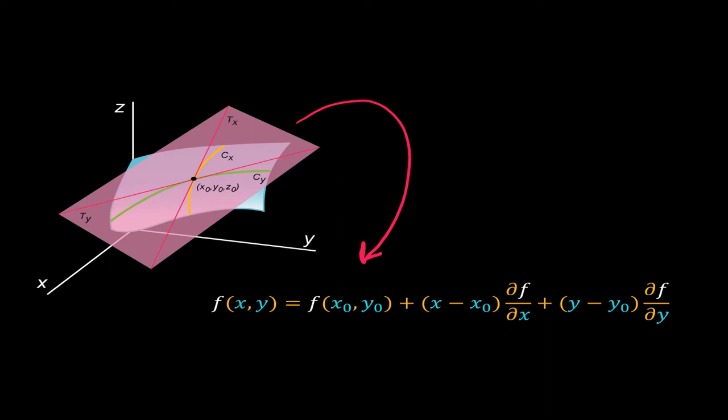Using the equations for these two tangents, we can easily get the equation for this plane. That is, F of X, Y is equal to F of X0, Y0 plus X minus X0 into del F del X plus Y minus Y0 into del F del Y. This equation is at the heart of what we will learn in this video.